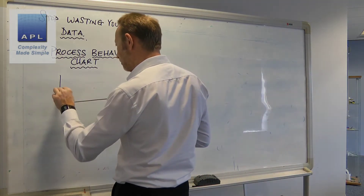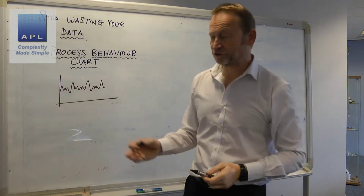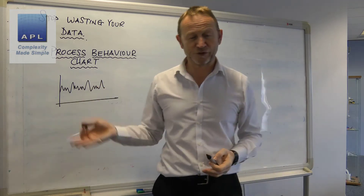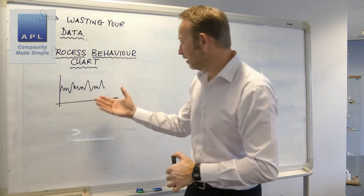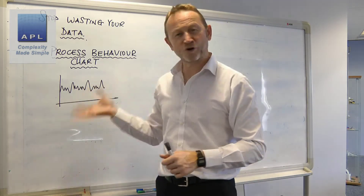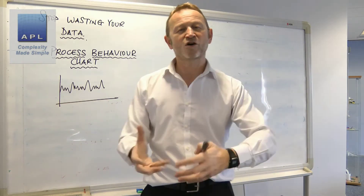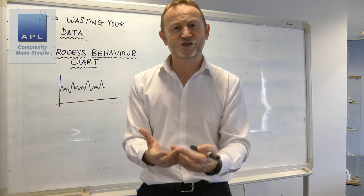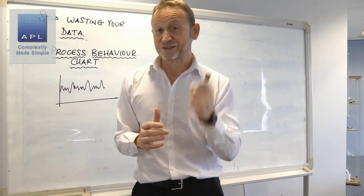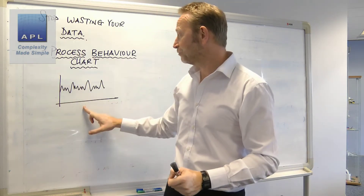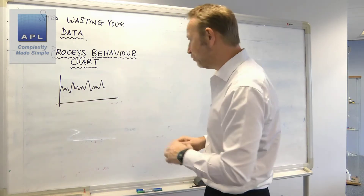A process behavior chart — what is it really? It's simply a run chart. If I want to turn it into an SPC chart I'll add limits and do some calculations, but initially just put it on a graph. Six sigma is known for complex data analysis, but that's totally unnecessary. We just need to do the simplest thing with our data — a simple run chart to see the behavior.